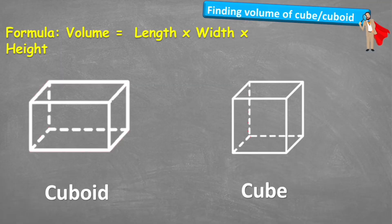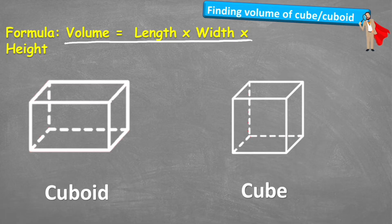Welcome back to The Maths Guy everybody. Today we are looking at how to find the volume of cuboids and cubes. Let's first of all look at our formula: volume is equal to length times width times height.